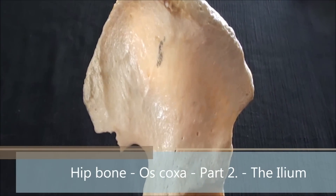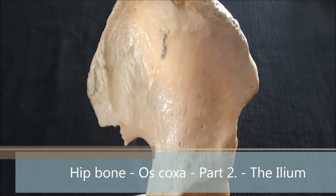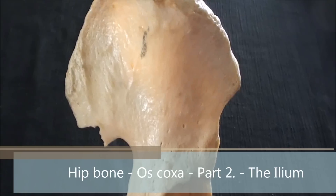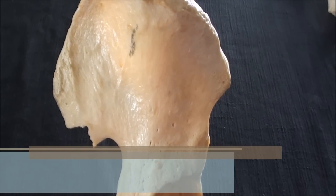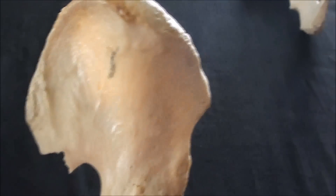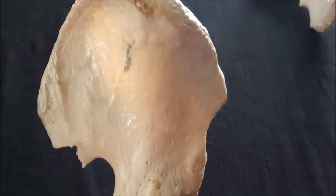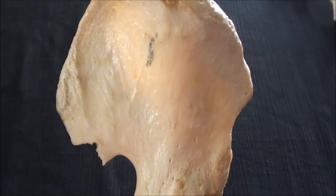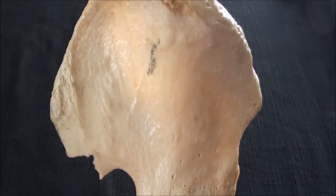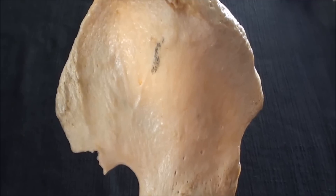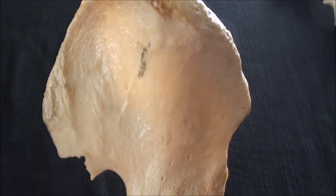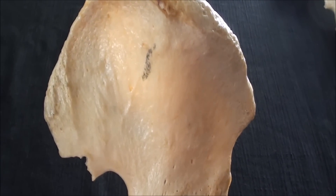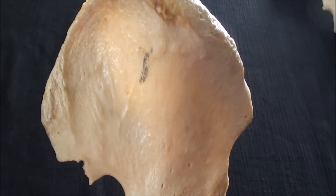This is again the right-sided hip bone, this time being captured from a posterior and lateral direction. Only from that direction can one fully illustrate the entire iliac part of the hip bone. It really is a flat, broadened part of the bone, which is described in the following form.